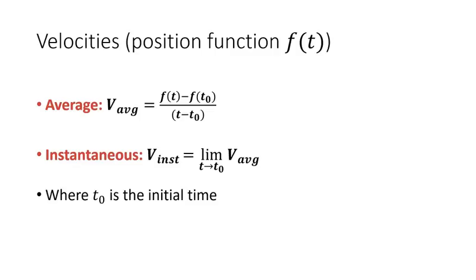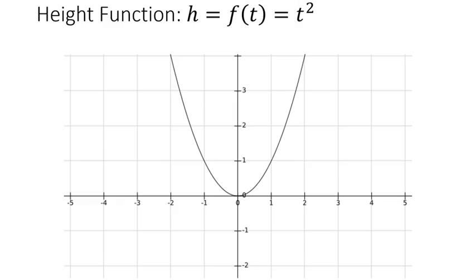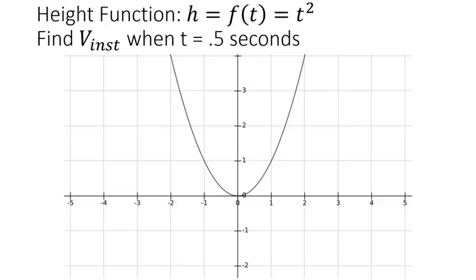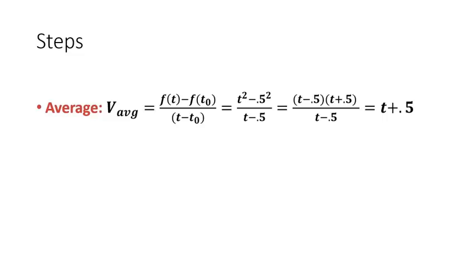So let's look at an example. Say I have a function that tells me my height position in terms of t in seconds, and f of t equals t squared. We want to find the instantaneous velocity when t equals 0.5. First thing we do is find the average velocity function. We just follow the equation here, and we get t plus 0.5.